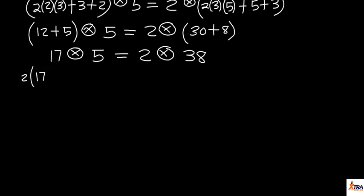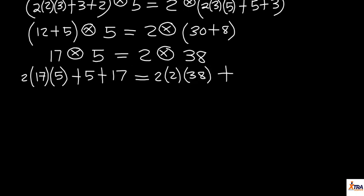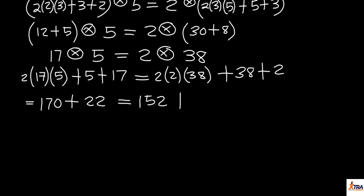Now computing 17 ⊕ 5 with p = 17 and q = 5: 2×17×5 + 5 + 17 = 170 + 22 = 192. For 2 ⊕ 38 with p = 2 and q = 38: 2×2×38 + 38 + 2 = 152 + 40 = 192. The final values are both 192, so the left-hand side equals the right-hand side.